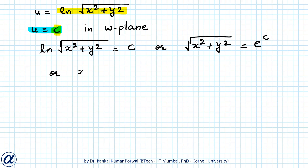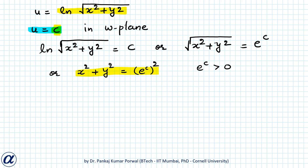We get x²+y² equals to e^c whole squared, and we know that e^c is always greater than 0. So this equation is the equation of a circle with center at (0,0), that is the origin, and radius e^c.